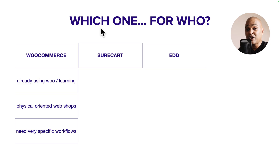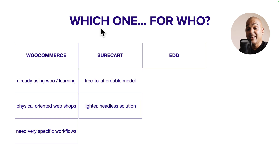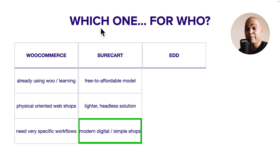SureCart is a great option if you want a free-to-affordable model. Even in the free plan you get a ton of awesome features, and you can always upgrade. Whereas with WooCommerce and EDD you'd need to spend money for the same things. If you're looking for a lighter and more secure solution, SureCart's headless architecture is the perfect candidate. And if you want a modern-looking website or a simpler physical shop, SureCart is very flexible in terms of design — you can really brand your website the way you want.